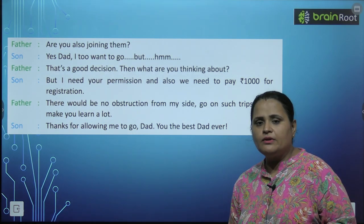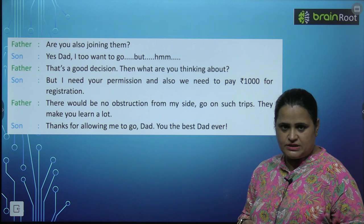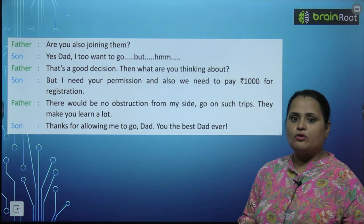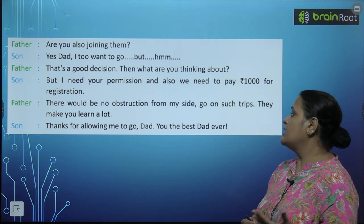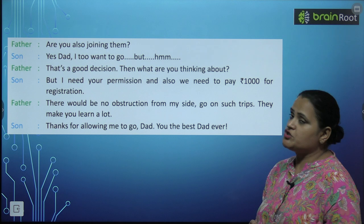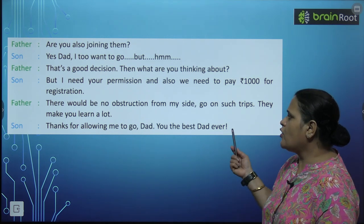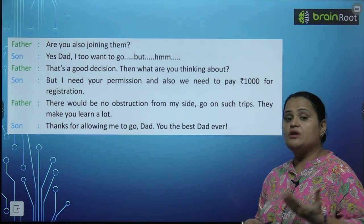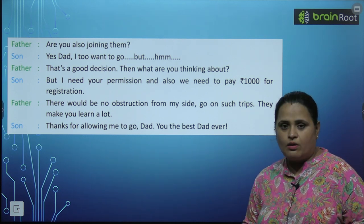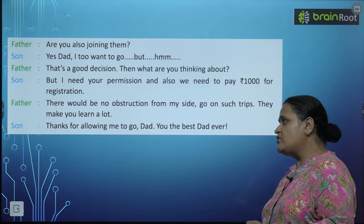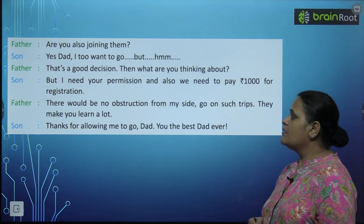Father: That's a good decision. Then what are you thinking about? Son: But I need your permission, and we need to pay one thousand rupees for registration. Father: There would be no obstruction from my side. मेरी तरफ से कोई बाधा नहीं आएगी. Go on such trips — they make you learn a lot. Son: Thanks for allowing me to go, Dad. You are the best dad. इस तरह से बच्चों permission ली जाती है.